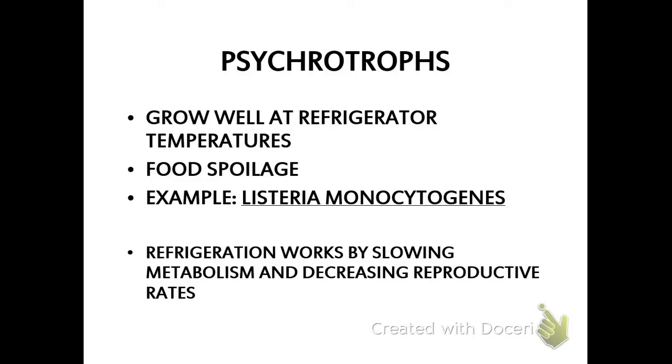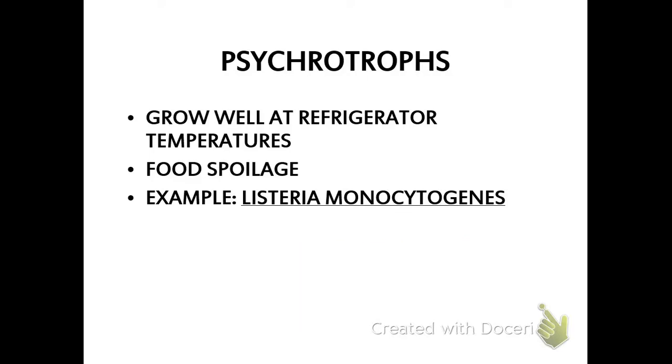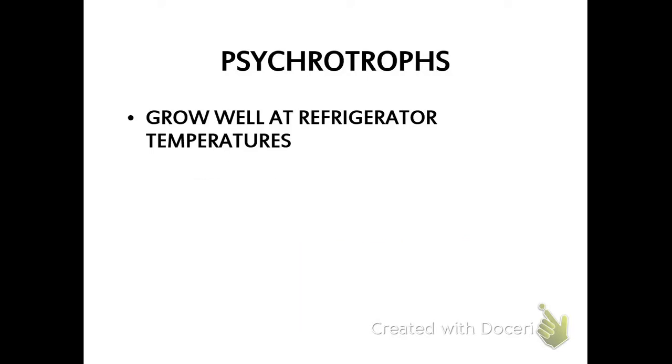Listeria monocytogenes is an example. You've probably heard of listeria spoiling sandwich meat. Turkey, hot dogs, bologna and such like that. That's a psychrotroph. The reason we put stuff in the refrigerator is it slows down the growth. Your milk is still going to spoil in the refrigerator, but it's going to take longer, right? On the counter, it's going to spoil in an hour. In the refrigerator, it's going to spoil in two weeks.